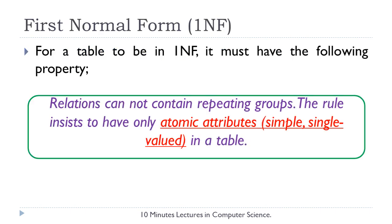First normal form: the property for a table to be in first normal form requires a relation to have only atomic attributes. That is, the values stored in every record of each of these attributes must be indivisible — they cannot be split further into multiple values. Tables with repeating groups of values or multi-valued attributes are referred to as unnormalized tables.